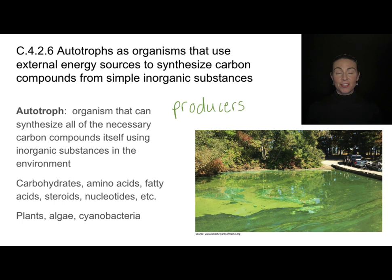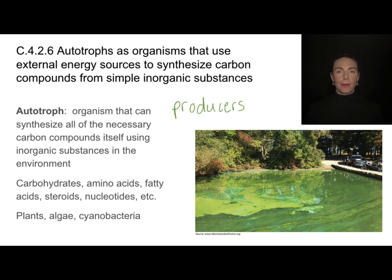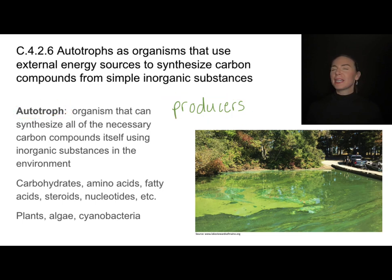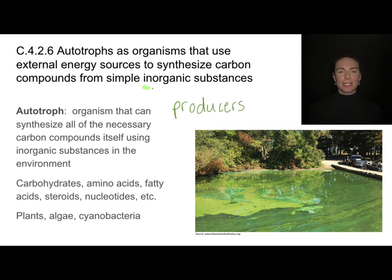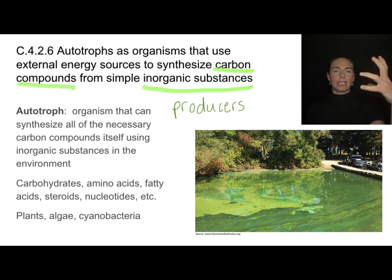I've been referring to the beginning-of-food-chain organisms as producers — that's their role in the ecosystem. If we talk about them in terms of metabolism, we call them autotrophs. They're the same organisms: plants, algae, cyanobacteria. What makes these organisms special is that they can take inorganic substances like carbon dioxide and synthesize carbon compounds — they take inorganic things from their environment and make organic molecules.